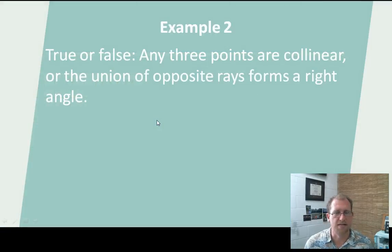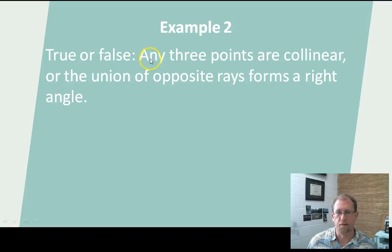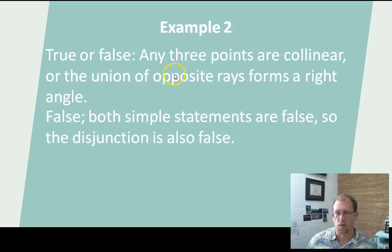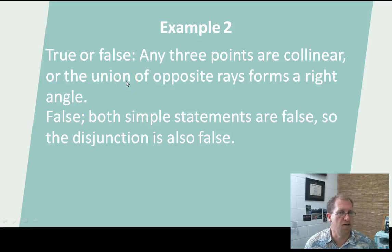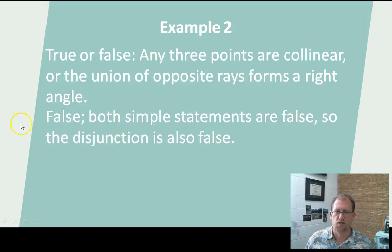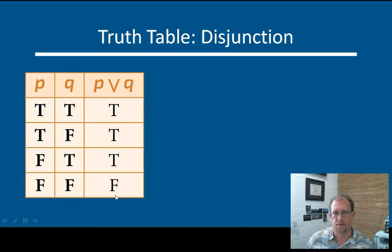True or false: any three points are collinear, or the union of opposite rays forms a right angle. I have two statements with an 'or' — P or Q. Is 'any three points are collinear' true? No — you can easily have three non-collinear points. Is 'the union of opposite rays forms a right angle' true? No — opposite rays form a straight line. So I have false or false, which is the only way to falsify a disjunction. Both simple statements are false, so the disjunction is also false.